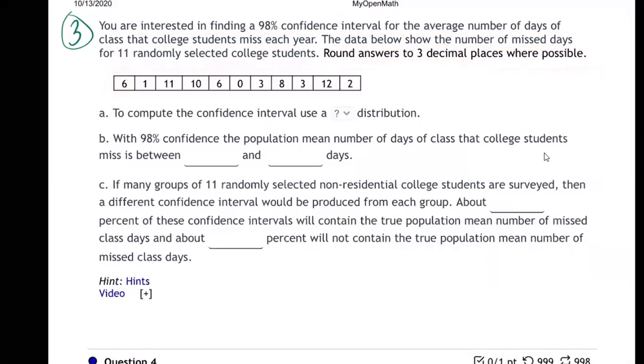So this is the data. So one student missed six days in a year, another one missed only one. Next one missed 11, 10, 6, 0—that's Mr. or Mrs. Perfect there. Three days, eight days, etc. So there's 11 students: 1, 2, 3, 4, 5, 6, 7, 8, 9, 10, 11.